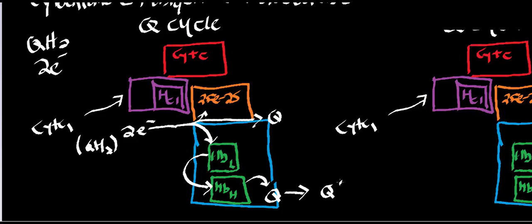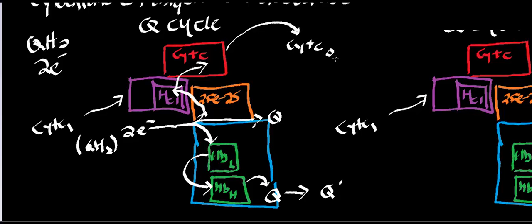Now the top electron went to the two-iron, two-sulfur center, then to heme C1, and from there to cytochrome C. Cytochrome C can accept only one electron at a time. The reduced cytochrome C donates its electron to complex four, generating an oxidized cytochrome C that returns back. The process that oxidizes cytochrome C is complex four, also called cytochrome C oxidase.